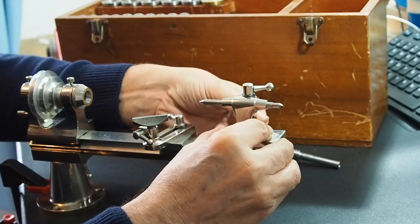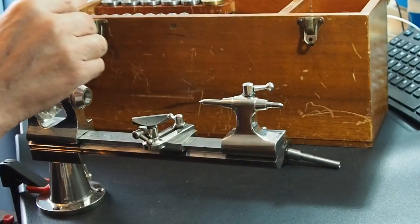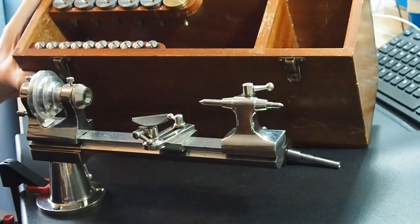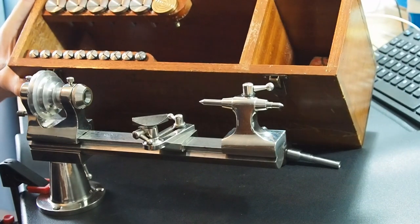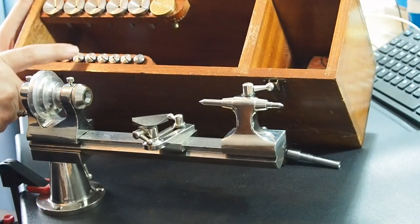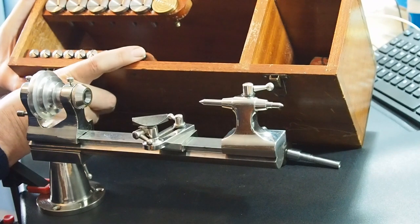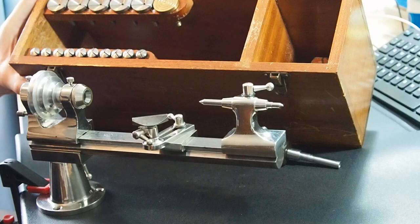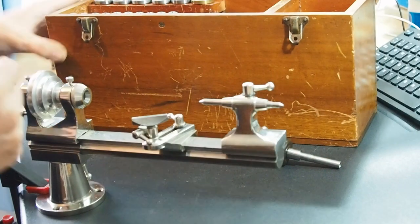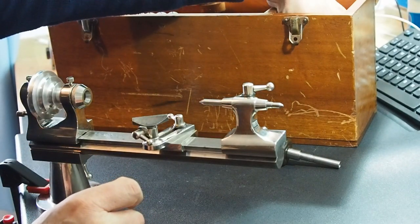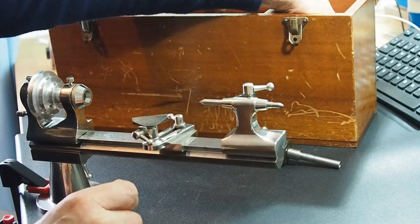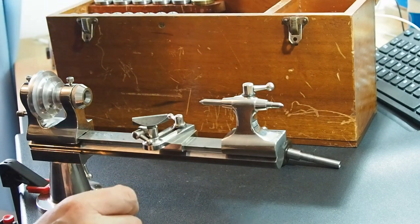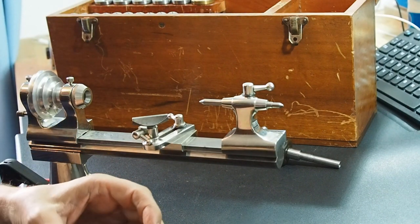So in the box we've got one, two, three, four, five, six, seven, eight, nine, ten collets, and one, two, three, four, five, six there, so we've got sixteen all together. Most, not all of them, but the majority of them are IME ones, so they are the original ones that match the make of the lathe.